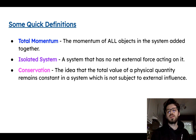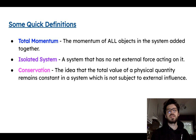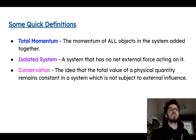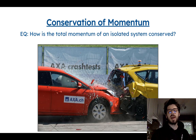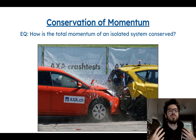Conservation is the idea that the total value of a physical quantity remains constant in the system. A physical quantity could mean momentum or energy. Conservation just means that those values in your defined system remain constant over time, even if objects are losing momentum or energy. So to revisit the essential question — how is the total momentum of an isolated system conserved — we're saying in layperson's terms: how does all the added momentum of a system I defined remain constant over time?